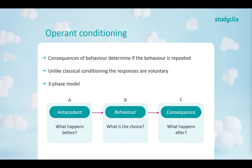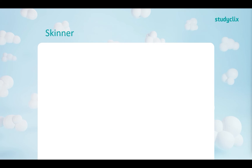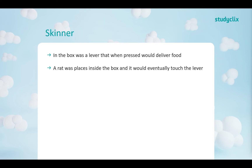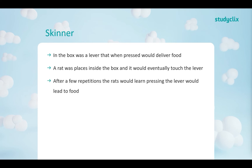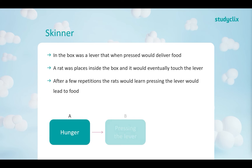In Skinner's experiment, there was a box with a lever that when pressed would deliver food. A hungry rat was placed inside and would eventually explore and touch the lever. After a couple of repetitions, the rat learned that pressing the lever led to food, so when hungry it would press the lever to feed itself. Here, the antecedent is hunger, the behavior is pressing the lever, and the consequence is getting food.